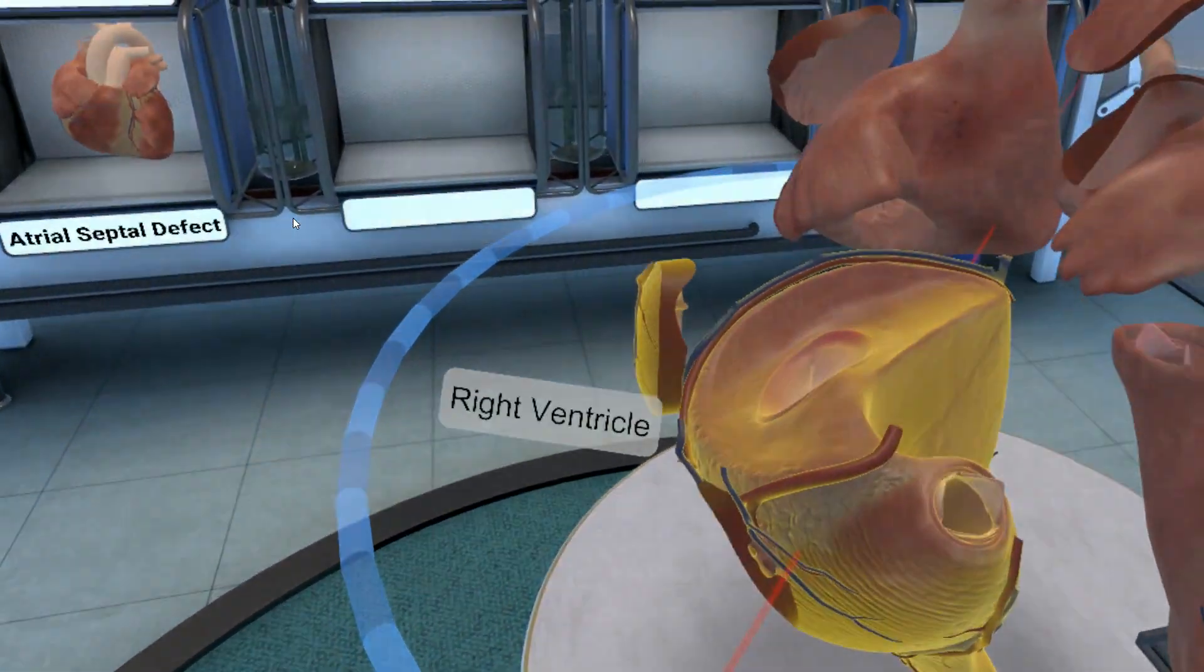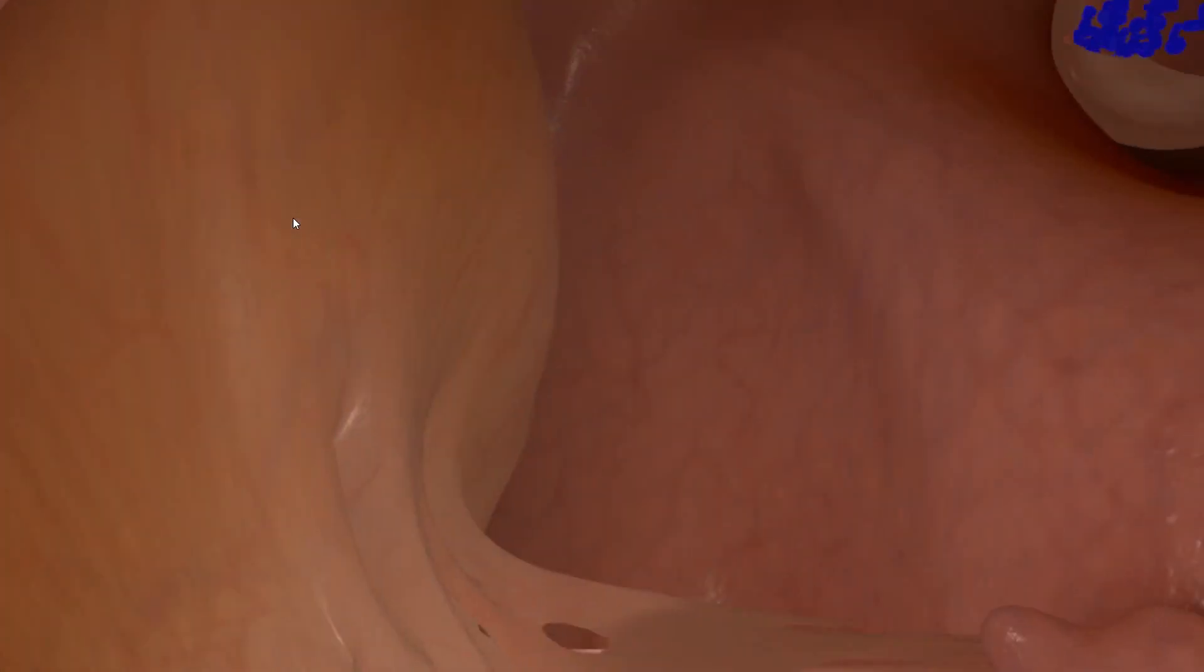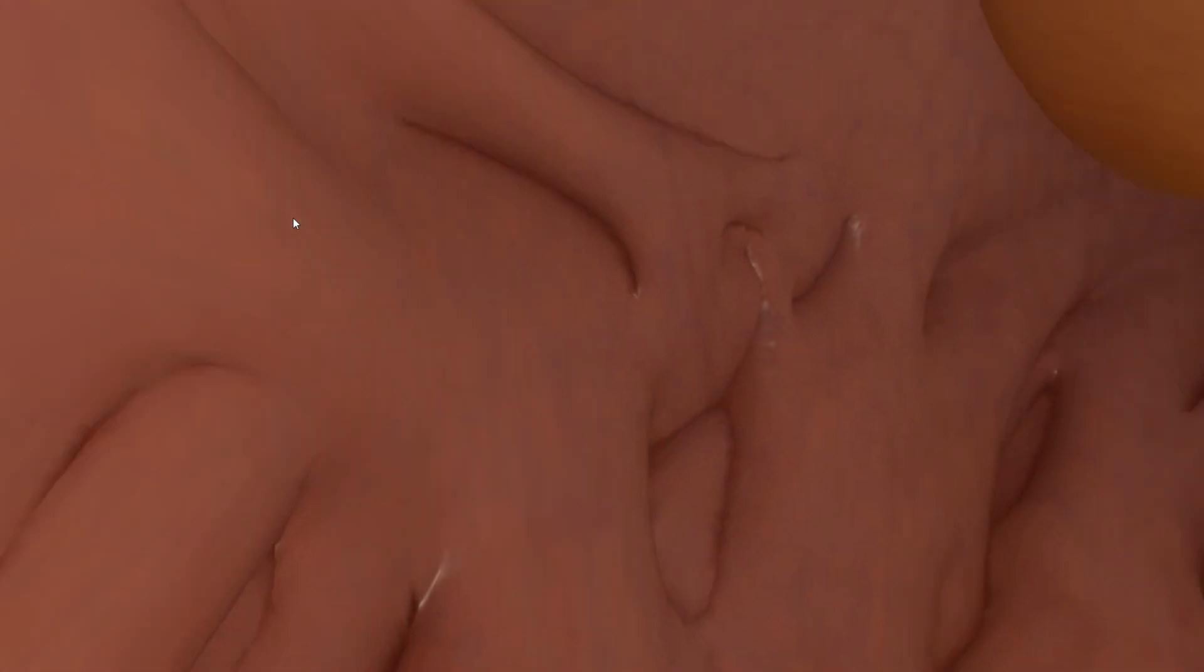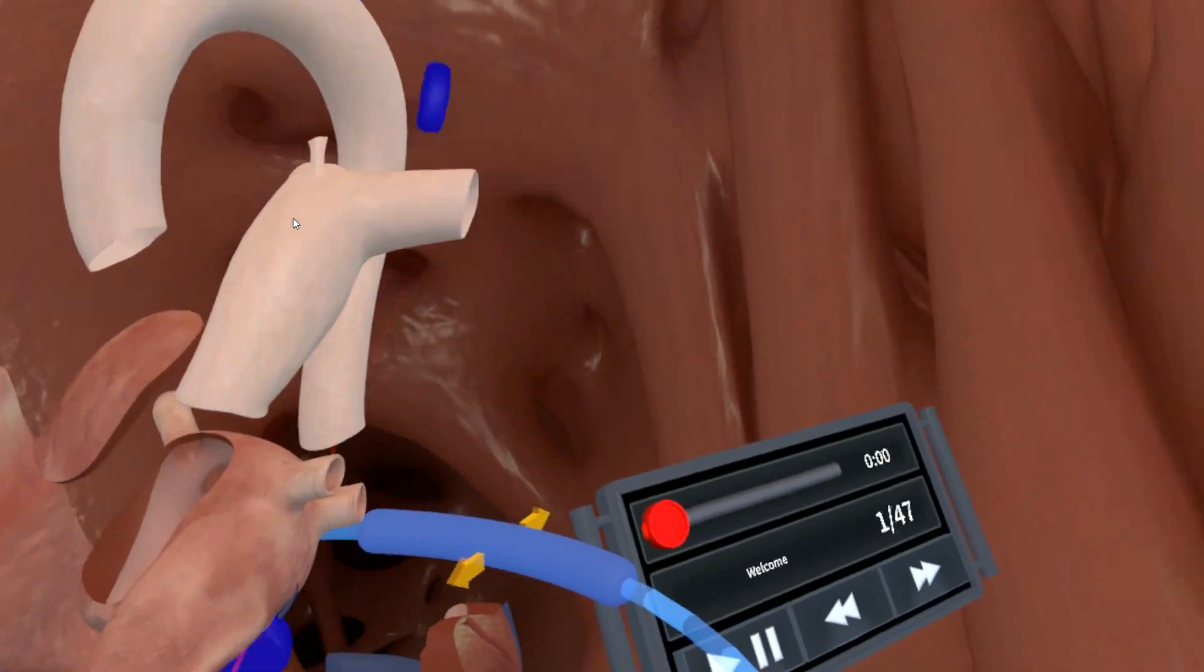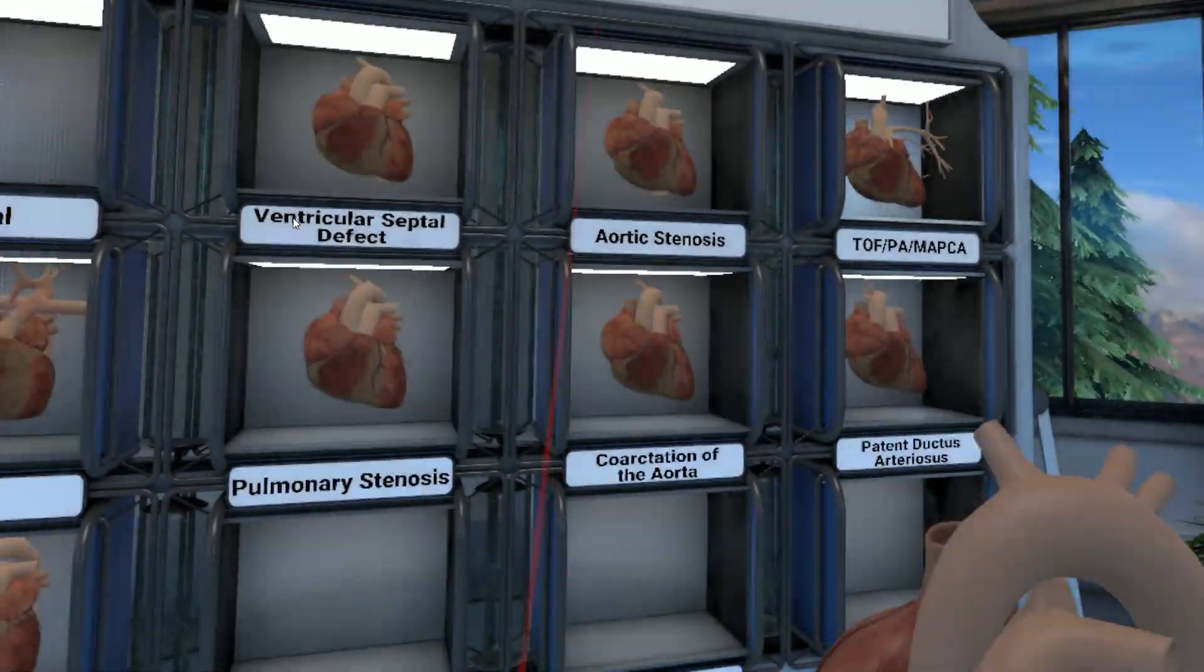The lub comes from the mitral and tricuspid valves closing and the second one, the aortic and pulmonic valves. That's what they assume at least. If we teleport ourselves to inside the heart like we are right now, you could hear the different heart elements.